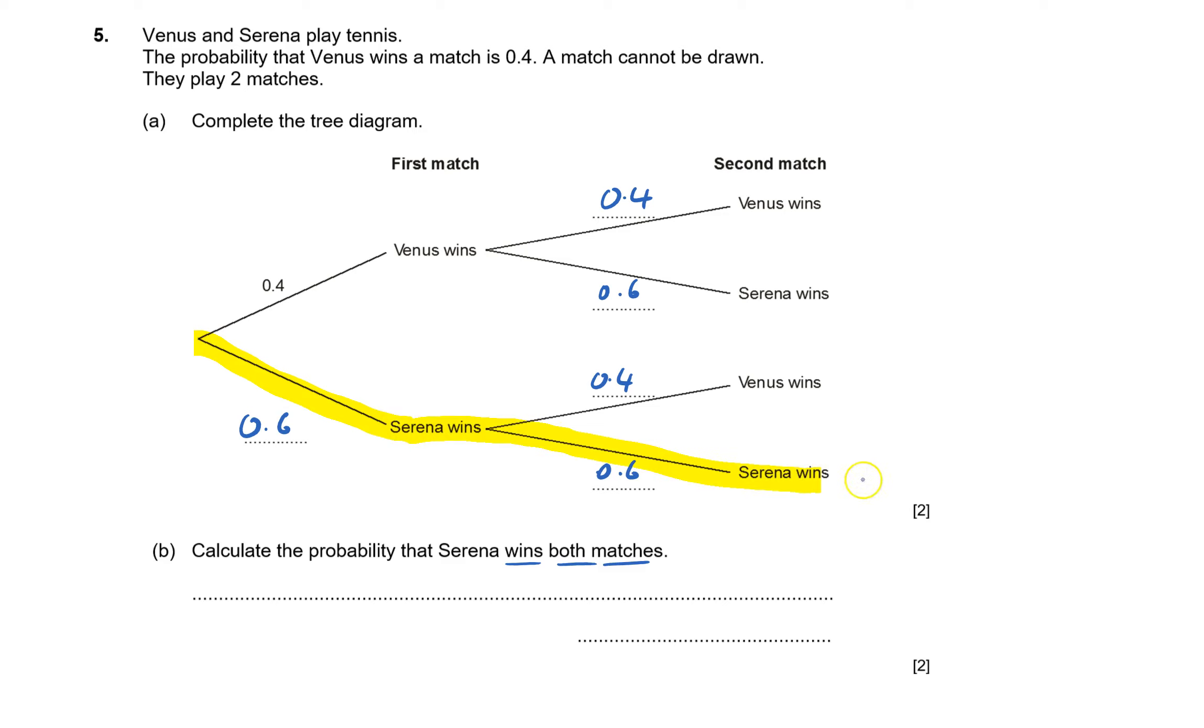When I'm doing this, I'm always going to mark that with a cross to mark the route going through, and that cross also reminds me I have to multiply. So I need to do 0.6 times 0.6, and as always, I do 6 times 6, which gives me 36.